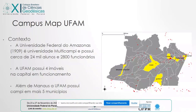The municipalities include Quari, Benjamin, Costão, Maitá, Takachari, and Parintins. So when we talk about a campus map, we have to understand that the university is quite diverse, and these campuses have very different characteristics between themselves.